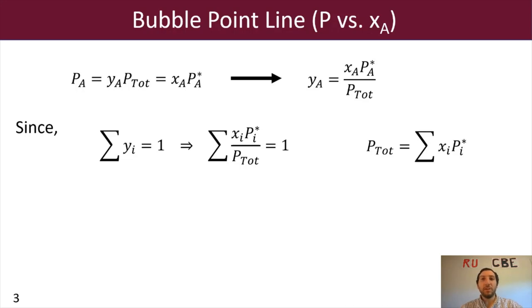And then what we can do for an ideal binary system is that we can say that P total is going to equal XA PA star plus XB PB star, as we spoke about in lecture 11.